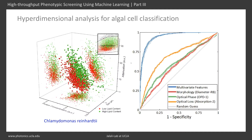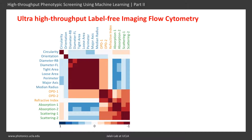The label-free selection of algae improves as more biophysical features are employed. This heatmap depicts the correlation between all 16 major features extracted from the quantitative images. Diagonal elements represent the autocorrelation of each feature. The subsets in boxes 1, 2, and 3 show high correlation because they are mainly related to morphological, optical phase, and loss feature categories, respectively.